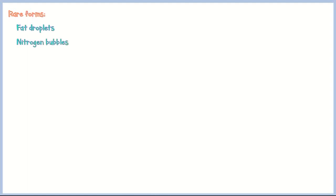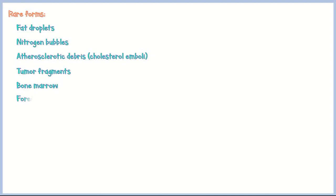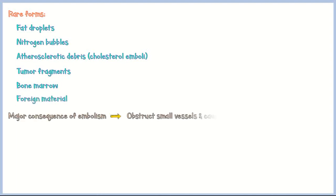Rare forms of emboli include fat droplets, nitrogen bubbles, atherosclerotic debris (also known as cholesterol emboli), tumor fragments, bone marrow, and foreign material. Regardless of the type, the major consequence of embolism is obstruction of small vessels, leading to ischemic necrosis of the affected organs.